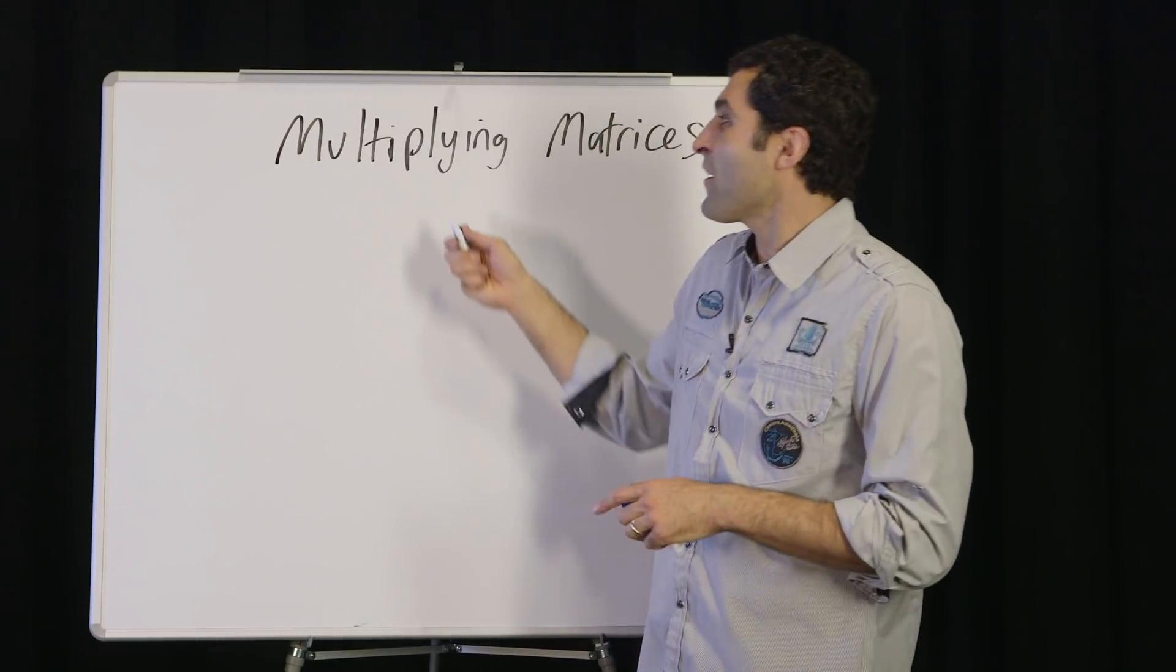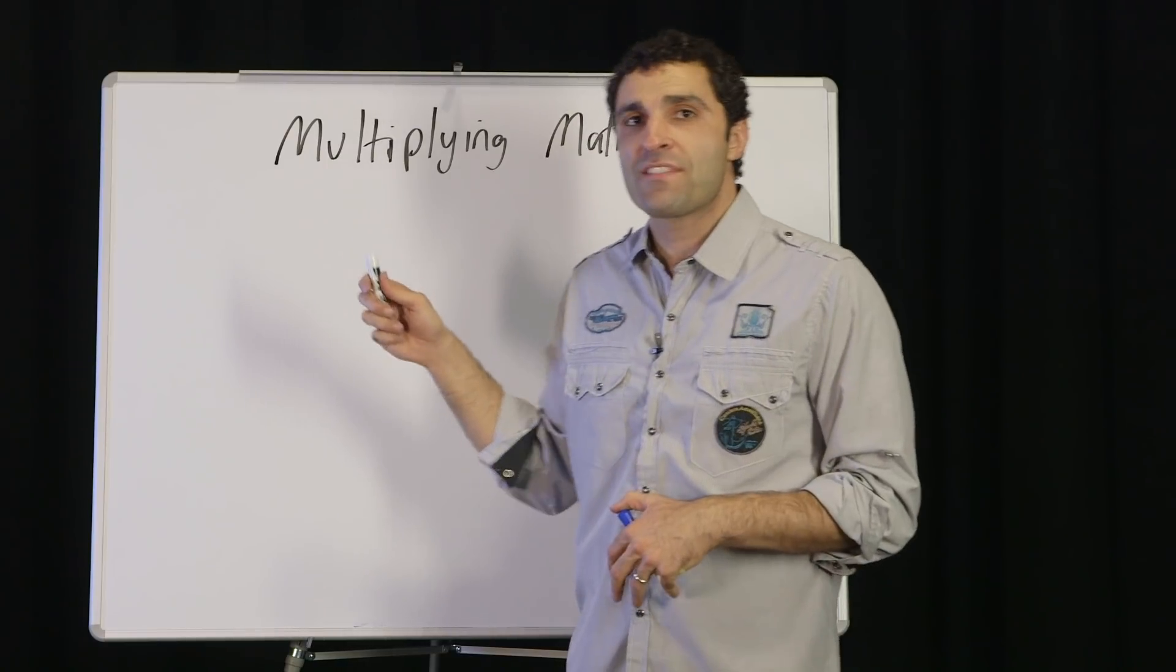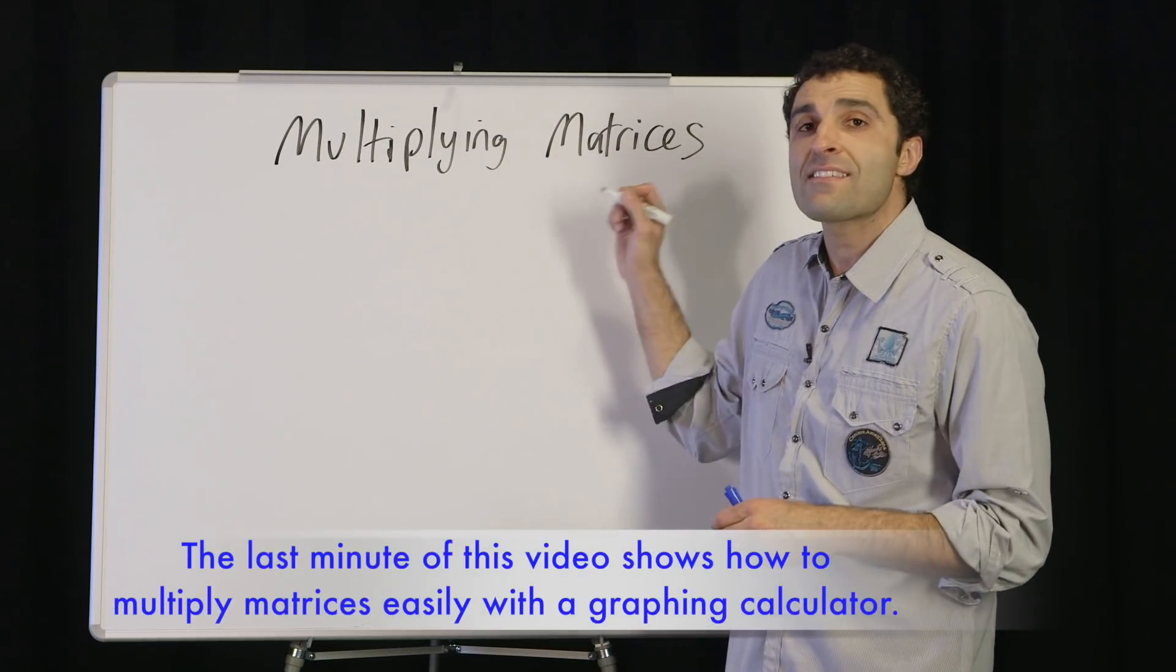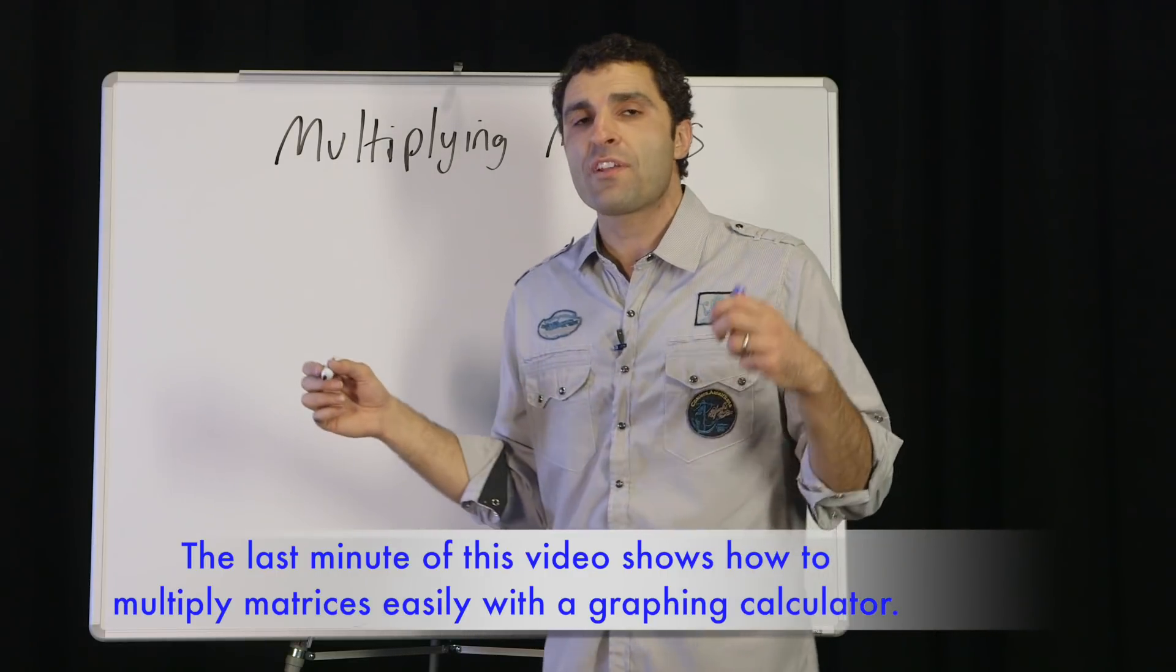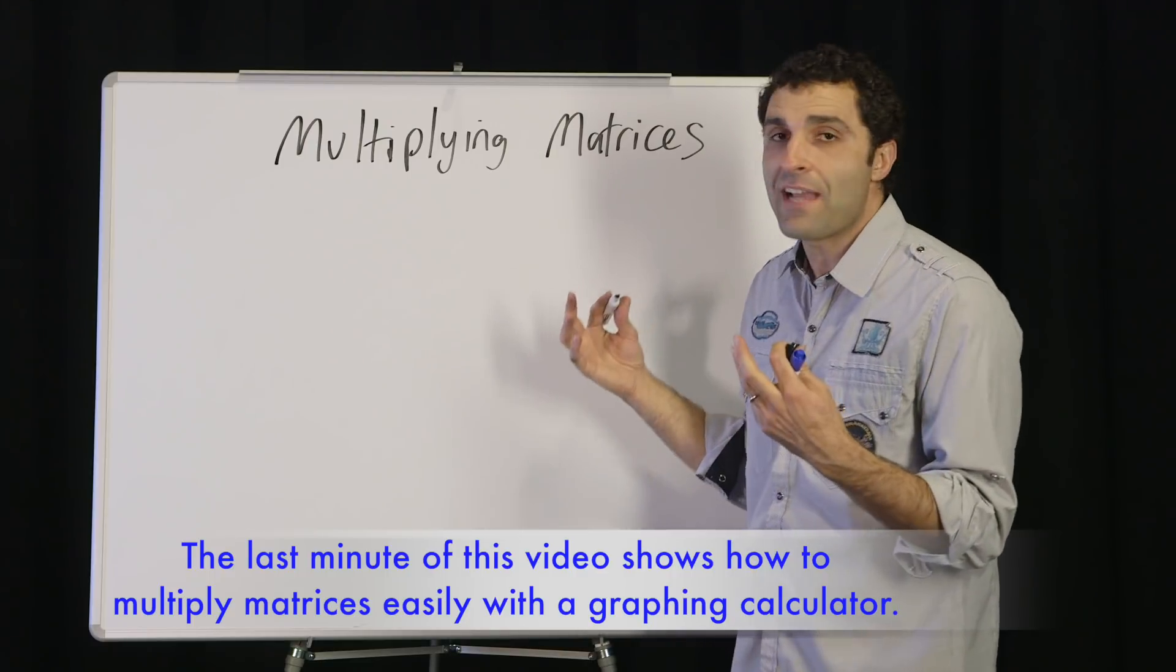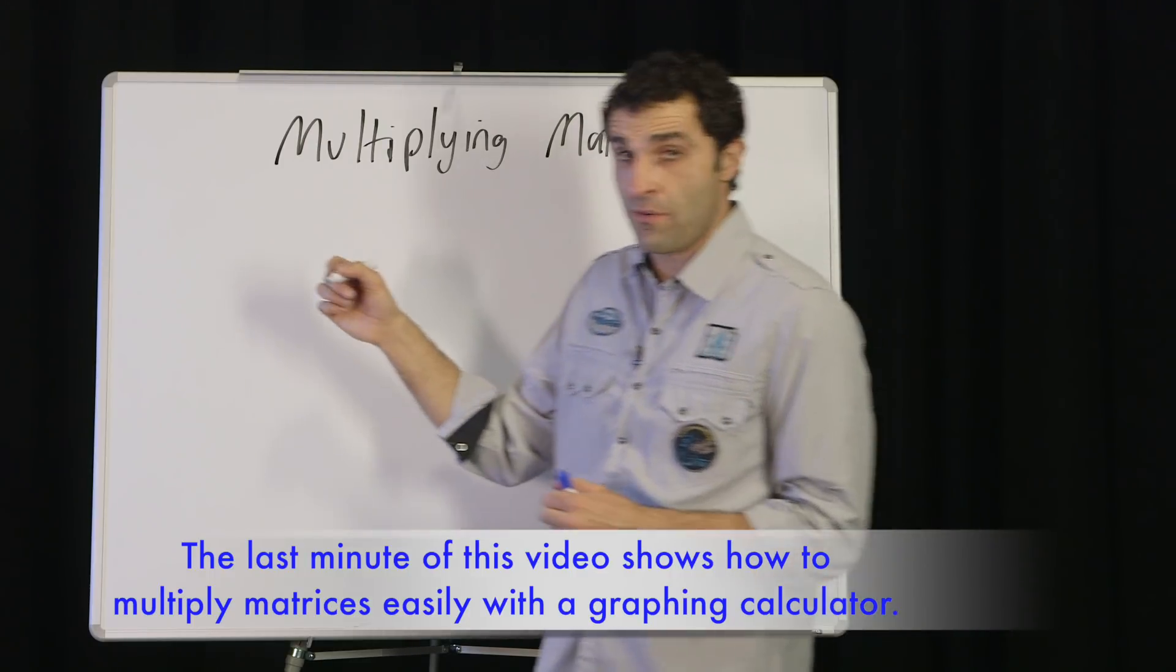And we're continuing our discussion about matrices, in this case multiplying them. So there is a system for multiplying these. It can be a little tricky, but after today you're going to be a lot better at it and you're going to understand the process going forward.